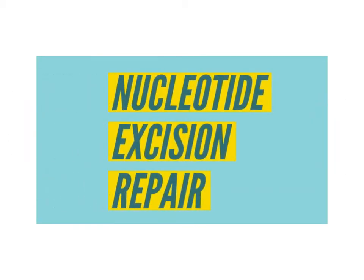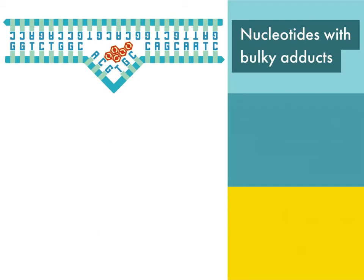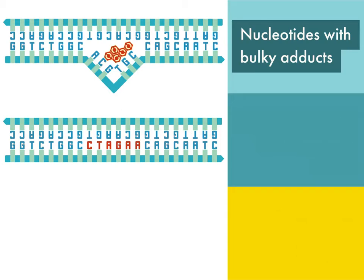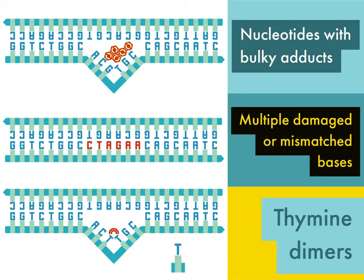Nucleotide excision repair recognizes three primary DNA errors or lesions. First, bulky adducts, which are attached to the bases — an adduct is a complex formed when a chemical binds to a biological molecule. Next, regions of mismatched or damaged bases, which involve more than one base. And finally, thymine dimers, also called pyrimidine dimers, which are covalently linked adjacent thymine bases. If a thymine dimer is not recognized and repaired during the next round of DNA replication, it may be read as a single base, potentially resulting in a frameshift mutation.